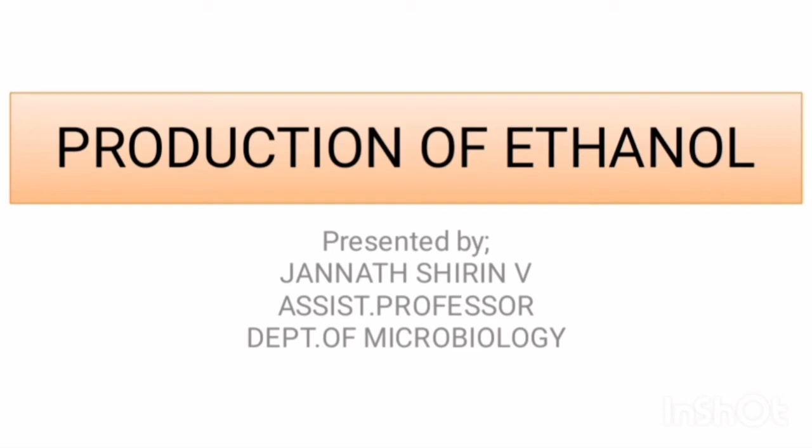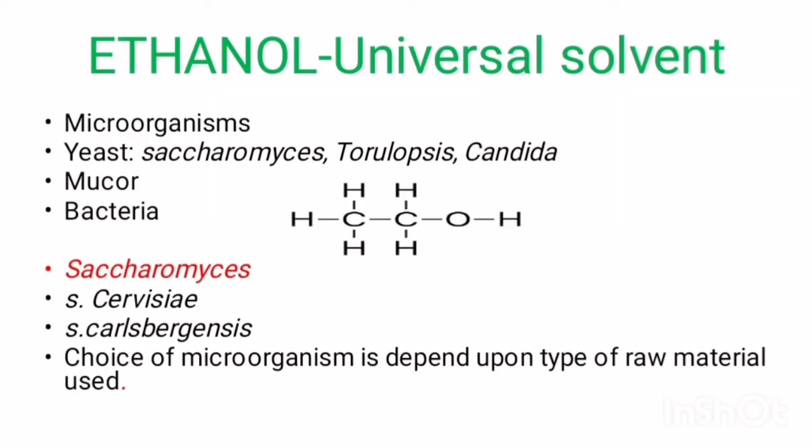Welcome all. Today I am going to discuss about production of ethanol. Ethanol is a universal solvent. It is the most common solvent and raw material. It is used in the laboratories and chemical industry.